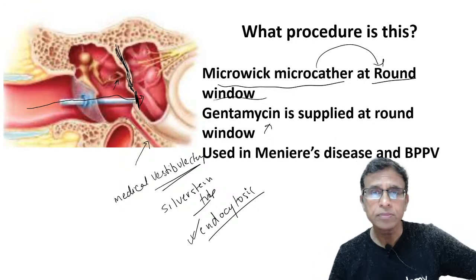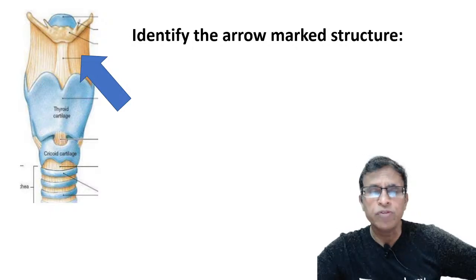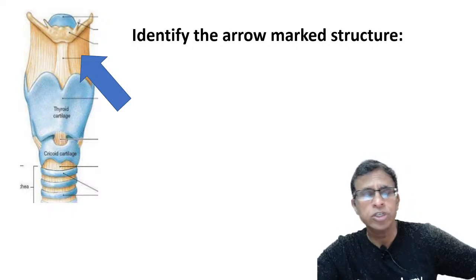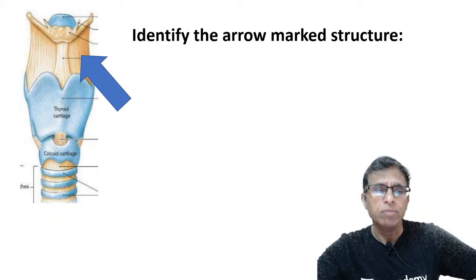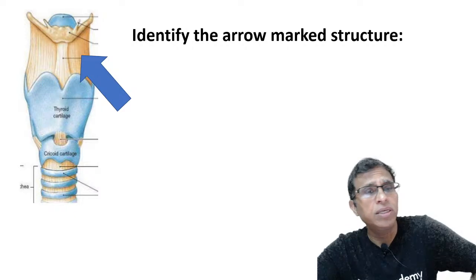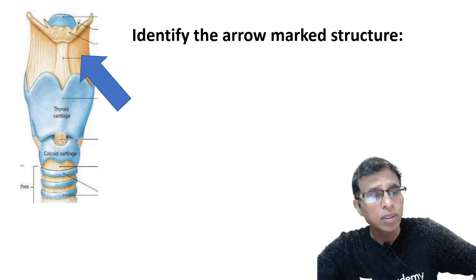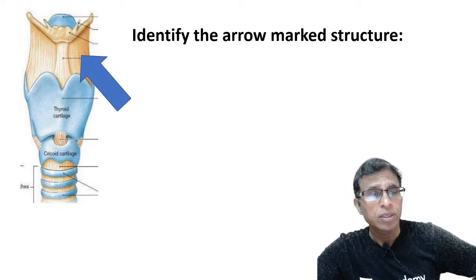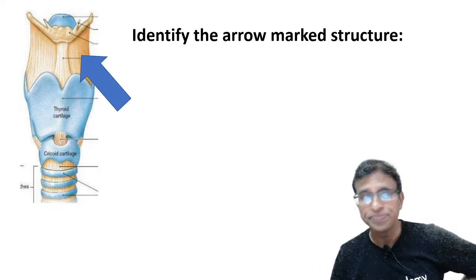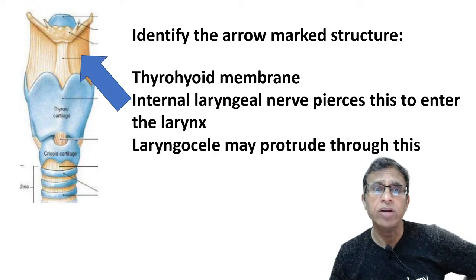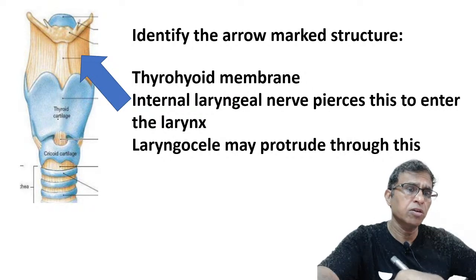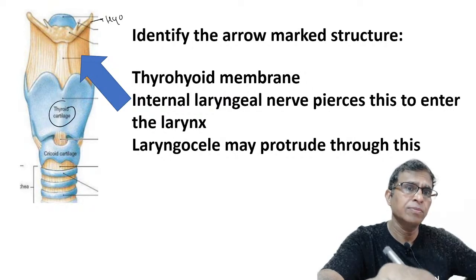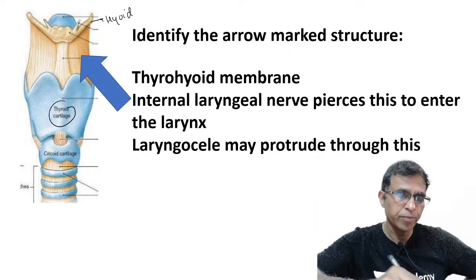Next, a very important question: identify the arrow-marked structure. It is the thyrohyoid membrane, running from the hyoid bone to the thyroid cartilage. Clinically it is important for two reasons: first, the internal laryngeal nerve (branch of the superior laryngeal nerve) pierces this membrane to enter the larynx; second, a laryngocele — which is dilation of the saccule — may protrude through this membrane to become an external laryngocele, causing a neck swelling.